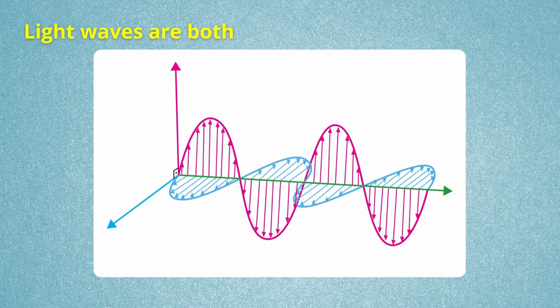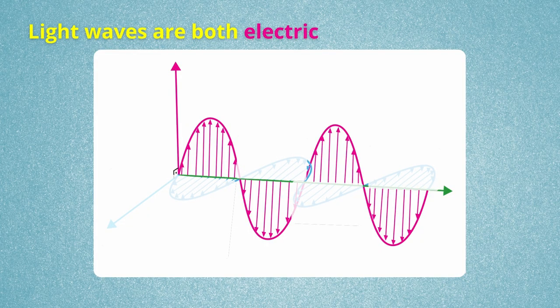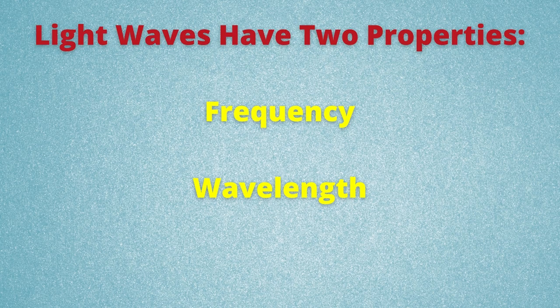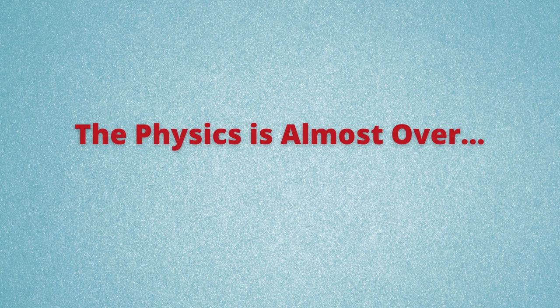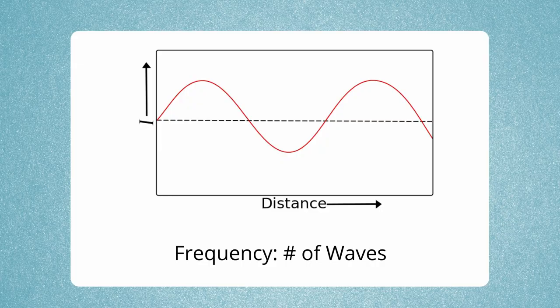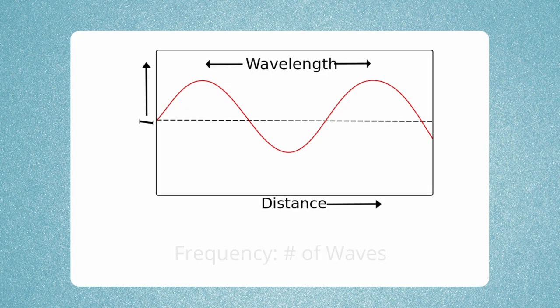Light is a wave of alternating electric and magnetic fields. These wavelengths of light have two main properties: frequency, measured in Hertz — and no, not the car company — and wavelength. The frequency is the number of waves that pass by a point in one second, while the wavelength is the distance from the peak of one wave to the peak of the next wave.